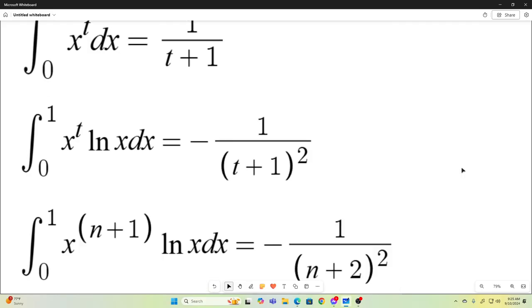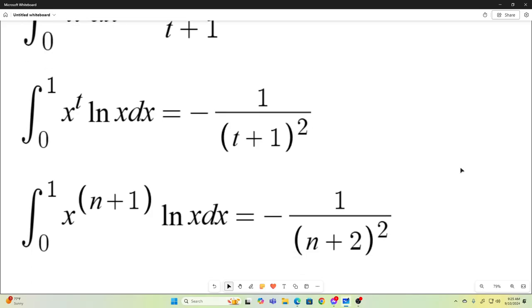Well, if that's true, then this is true. The integral from 0 to 1 of x to the n plus 1 natural log x dx is negative 1 over n plus 2 all squared. We just replace the t with an n plus 1.